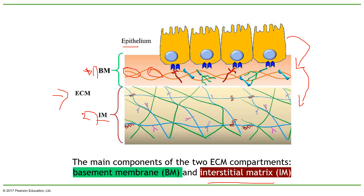Remember, the extracellular membrane has two main components: the basal membrane and the interstitial matrix. Every tissue has certain proteins and a slightly different extracellular membrane composition.